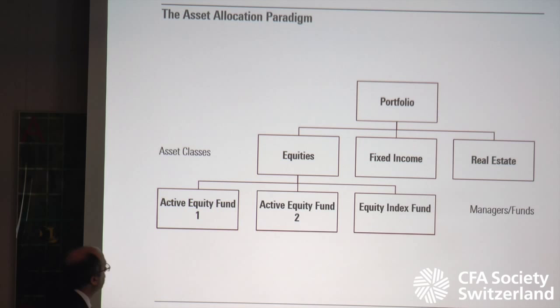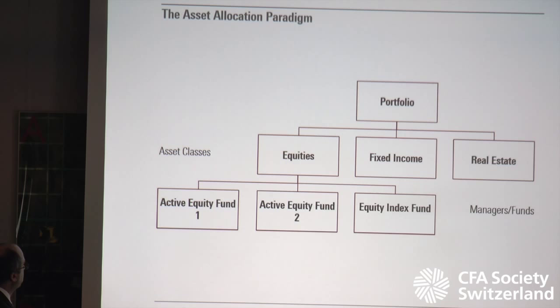This is the asset allocation paradigm shown graphically. As Markowitz says, in the first instance we do asset allocation — we divide our portfolio among the asset classes. Then at the second level we pick funds or managers to represent and implement those asset classes. We can do that with actively managed funds to get some alpha, use an index fund to simply replicate the asset class, or combine them.